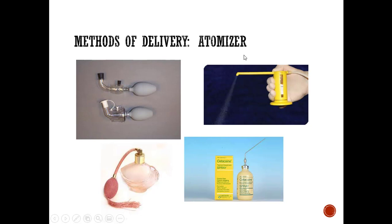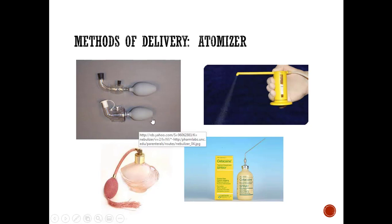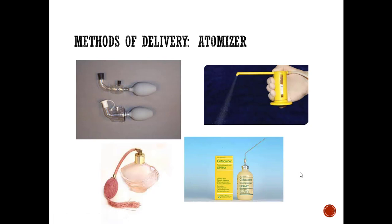The atomizer is a low-use device—historically resembling old perfume bottles, now in a more modern form. It's mainly used by some physicians during bronchoscopies to deliver lidocaine. It's designed to produce particles around five microns, targeting the upper airway to numb it before procedures that would cause gagging. Very specific use: higher microns, upper airway.